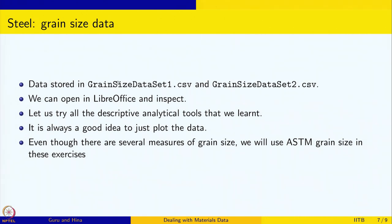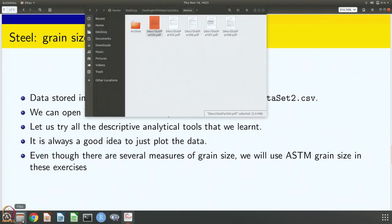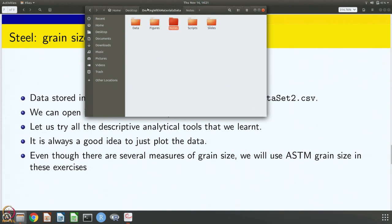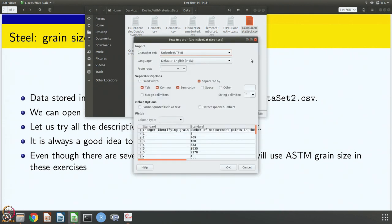We want to give names as much as possible which are intuitive and easy to understand and clear to follow. The two data sets: one is called grain size data set 1 and the other one is called grain size data set 2 dot CSV. We are going to open these files in LibreOffice and inspect. Let us go to the data and open grain size data set 1 dot CSV.